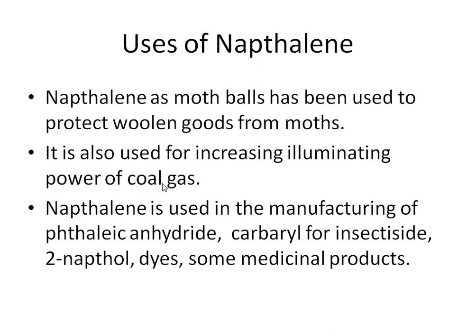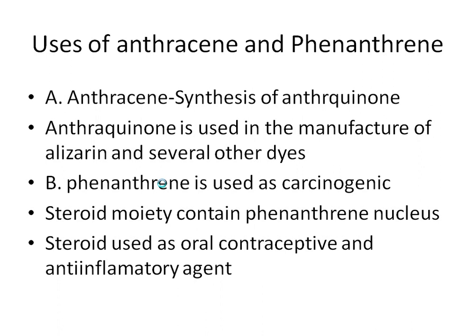Uses: naphthalene is used as mothballs to protect woolen goods from moths, has a good odor, is used to increase the illuminating power of coal gas, and is used in manufacturing phthalic anhydride, carbaryl (insecticide), naphthol, dyes, and medicinal products. Anthracene is used in synthesis of anthraquinone, which is a dye precursor for alizarin. Phenanthrene is a carcinogenic compound and is used in synthesis of oral contraceptives and anti-inflammatory agents.